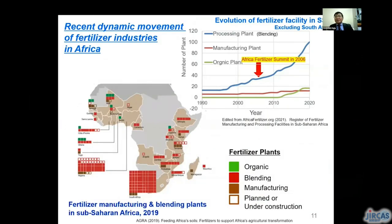Currently, there are dynamic movements in the fertilizer industry in Africa. This graph shows the evolution of fertilizer facilities in sub-Saharan Africa excluding South Africa. The number of processing plants — mostly blending plants — are increasing rapidly, allowing tailor-made fertilizer production adapted to different soil and climatic conditions and contributing to stabilization of fertilizer supply. However, the number of manufacturing plants is still low, since raw material deposits that are economically and technically feasible are localized and investment costs are quite high.